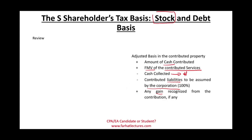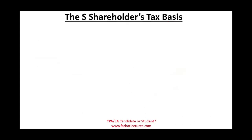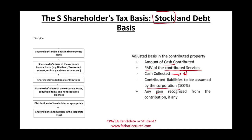Once the stock basis is established, it goes up and down. It increases by any corporate income items such as dividends and tax-exempt interest — yes, tax-exempt interest will increase your basis even though it's not taxable. Ordinary business income also increases the basis. Simply put, it goes up by separately and non-separately stated items. If the shareholder makes any additional contributions, those will also increase the basis.